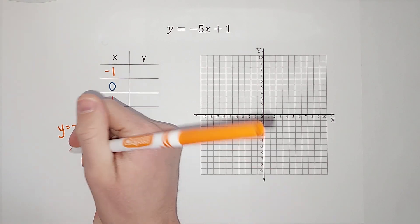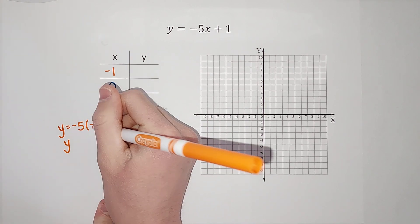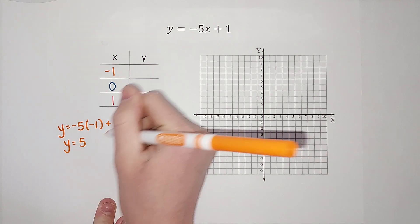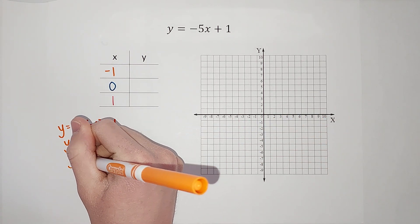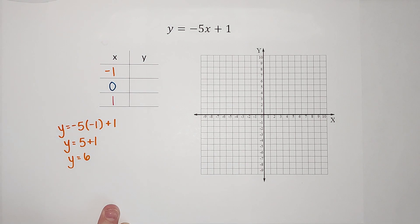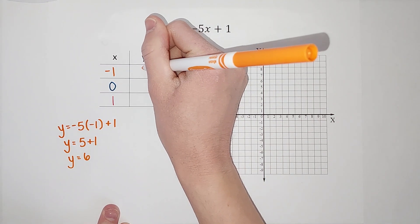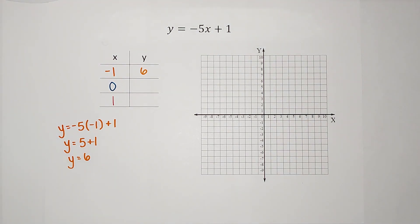So negative five times negative one, a negative times a negative gives me a positive plus one. So I get Y equals five plus one is six. So when X is negative one, Y is six.